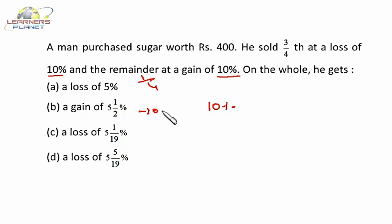So overall we don't know what is loss or profit, let it be X. And the ratio of these two is: this is three-fourths quantity selling at 10% loss, that means this is three-fourths quantity, and this is one-fourth quantity.